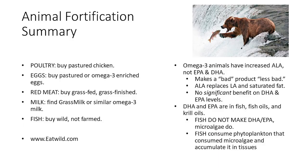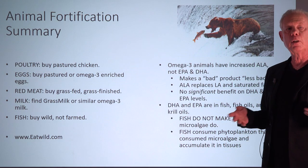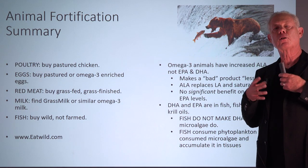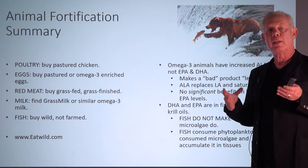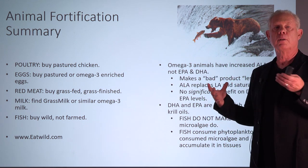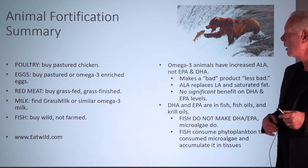Summary for food choices: poultry — buy pastured chicken; eggs — pastured or omega-3 enriched; red meat — grass-fed, grass-finished; milk — grass milk or similar omega-3 milk; fish — wild, not farmed. There's a good website, eatwild.com, where you can find sources in your community and state for grass-fed, grass-finished, and pastured animals.